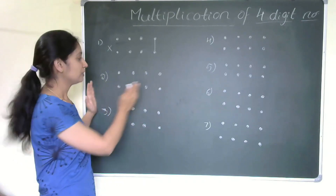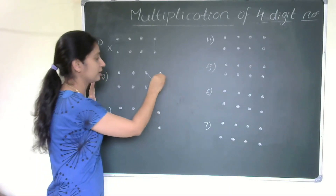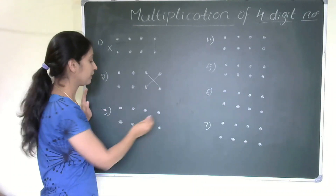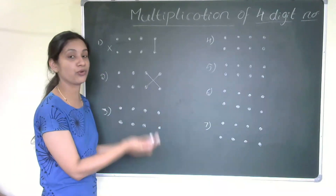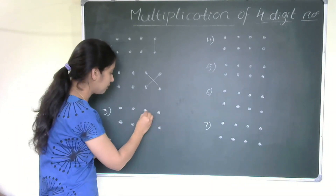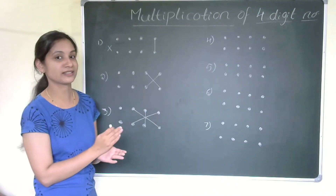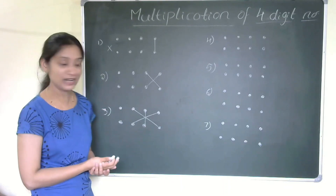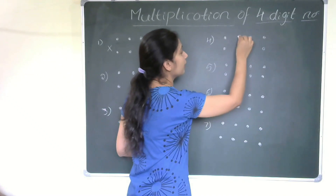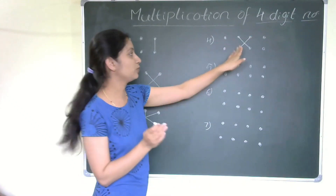Step two: moving to the left, we multiply these two digits crosswise — this one multiplied by this one, and this one multiplied by this one — then add the products. Step three: we follow the same pattern used in three-digit multiplication — multiply these two, then these, then these, and add all the products.